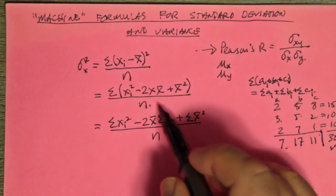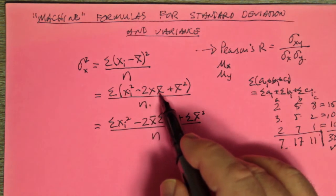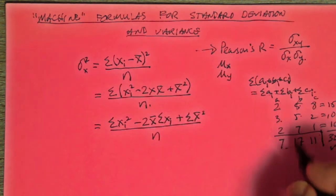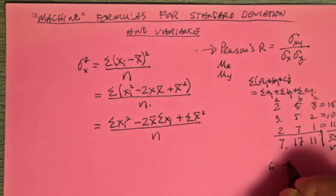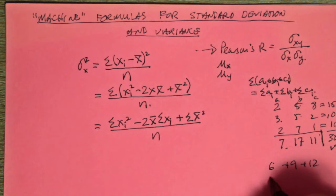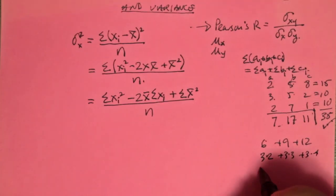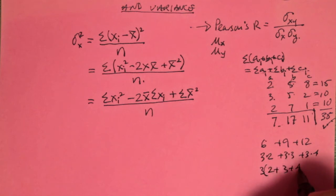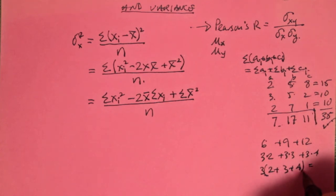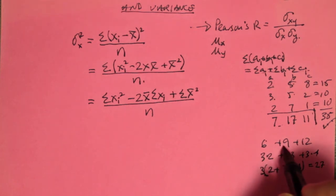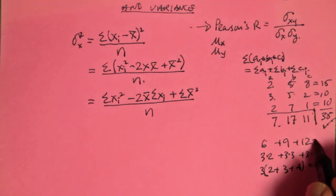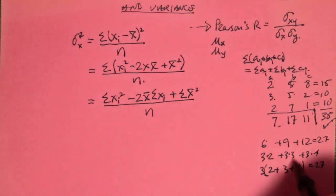I took X̄ out of the summation here. I could have said summation of 2·X·X̄, but because 2 is a constant and X̄ is a constant — it's like 6 plus 9 plus 12, which is really 3 times 2 plus 3 times 3 plus 3 times 4. I can take that out and say 3 times (2 plus 3 plus 4) — add 2, 3, and 4, then multiply the result by 3. So 2 and 3 is 5, and 4 is 9, and 3 nines are 27. If I'd done 6 plus 9 first I'd get 15 plus 12, which is also 27.